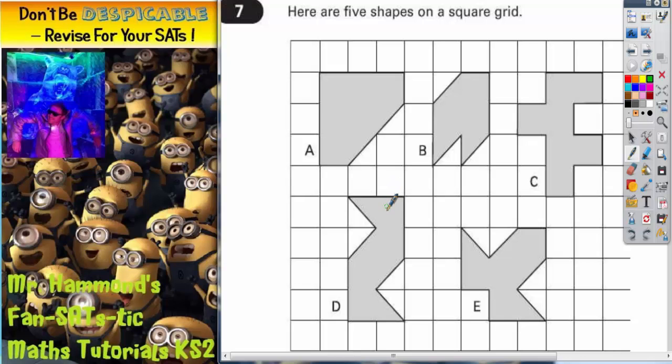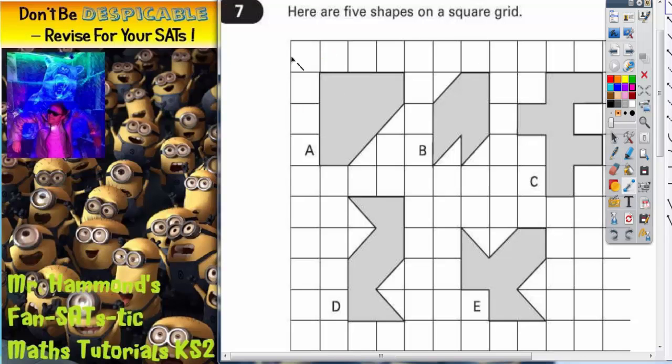So the two letters that you should be finding after you've checked every shape with a mirror for lines of symmetry is that letter A has a line of symmetry through the middle there.